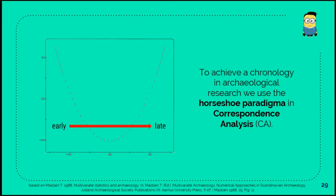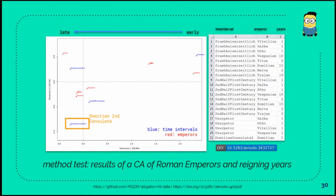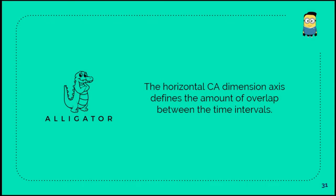If we achieve some kind of chronology in archaeological research, we use the Horschel Paradigma in correspondence analysis, and we have done that with some kind of method test with Roman emperors and their reigning years. We have some reigning years, in the end we have the CA and some output of the CA.